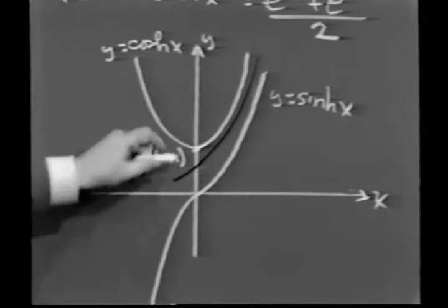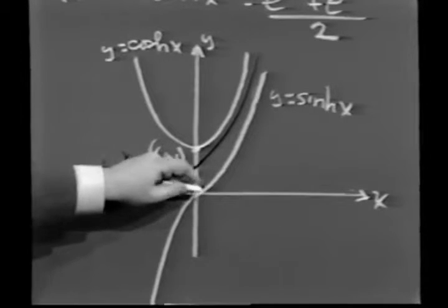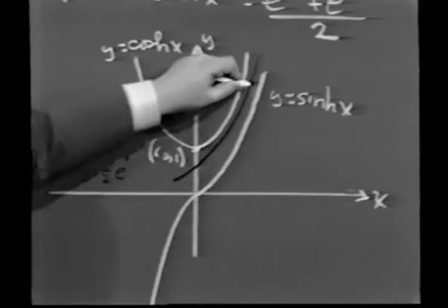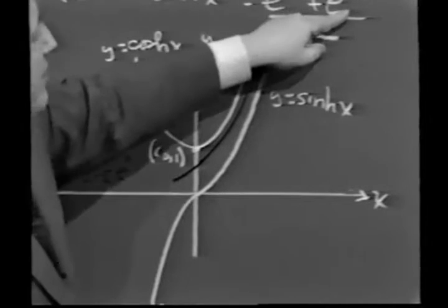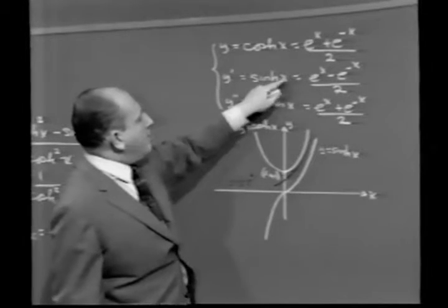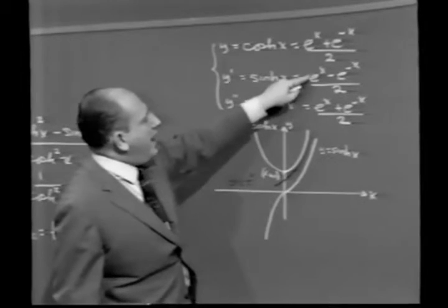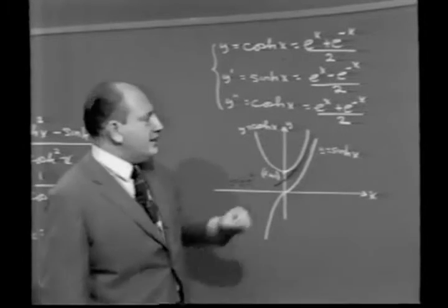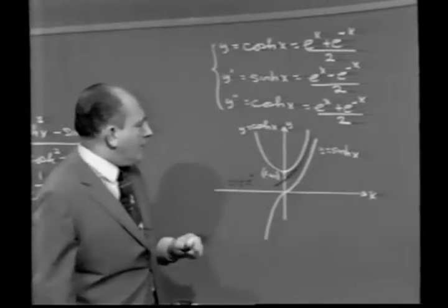Again, another interesting thing to observe here is that when x is very, very large, e to the minus x becomes negligible. And if e to the minus x is negligible, notice that both sinh and cosh behave like 1 half e to the x. In other words, this term tends to drop out.